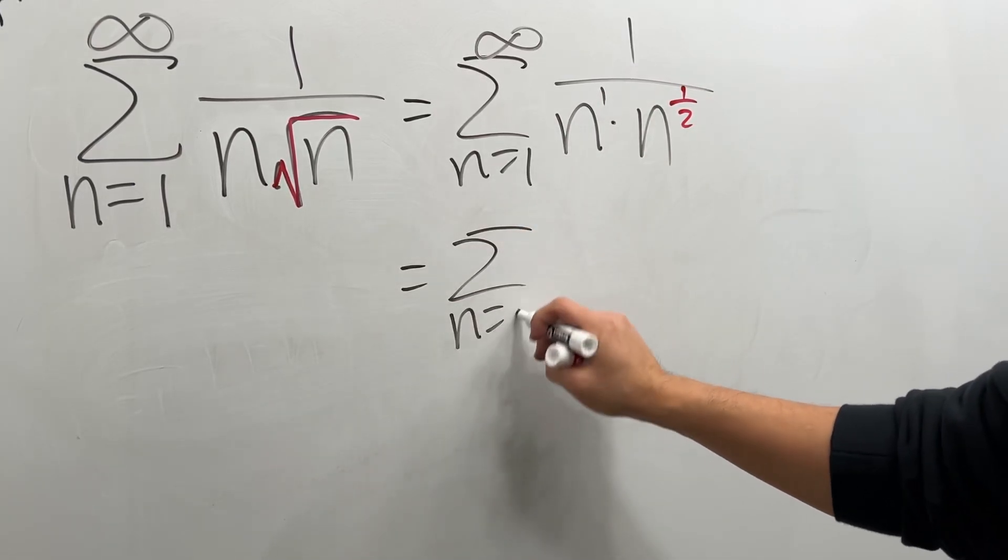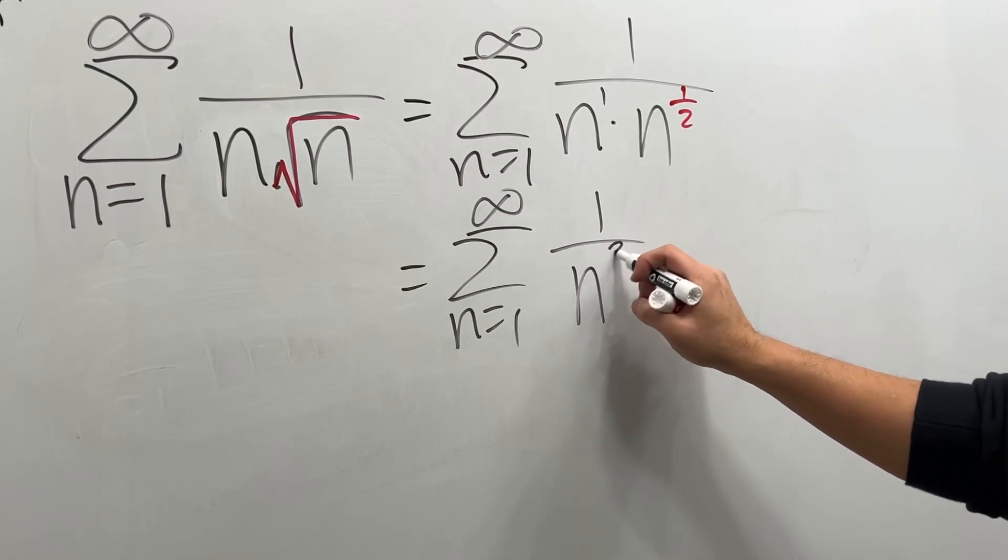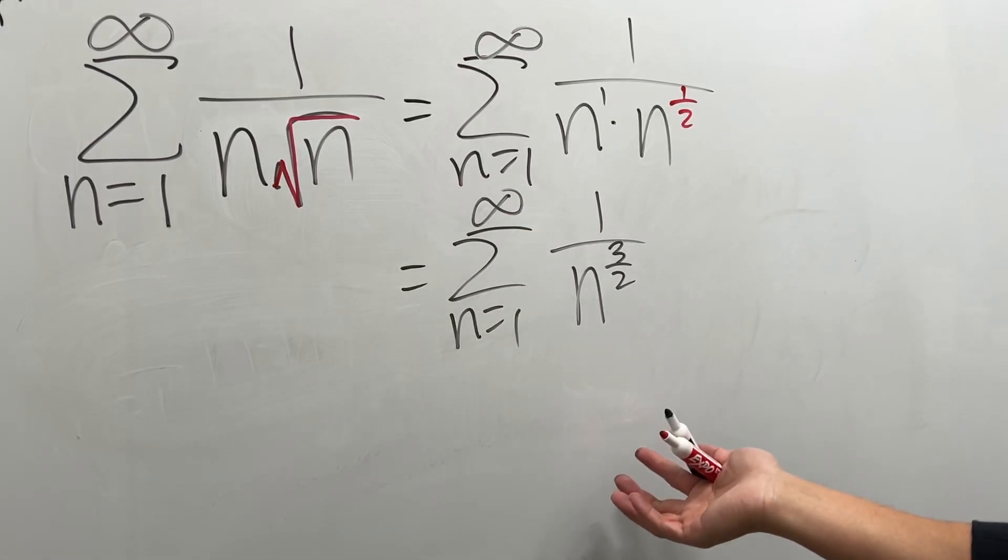So this is the series as n goes from 1 to infinity of 1 over n to the 3 over 2 power. And now this is just a p-series.